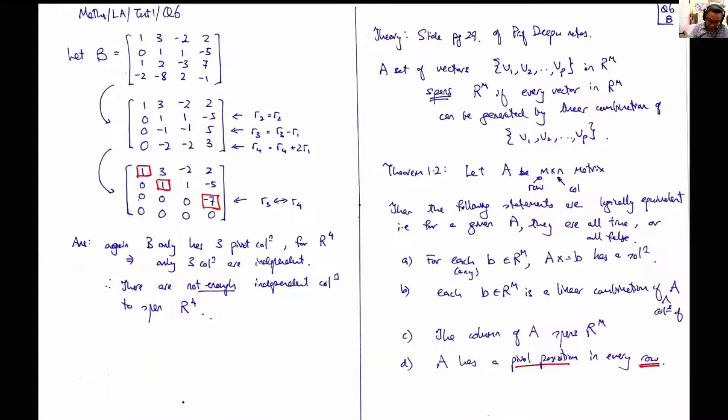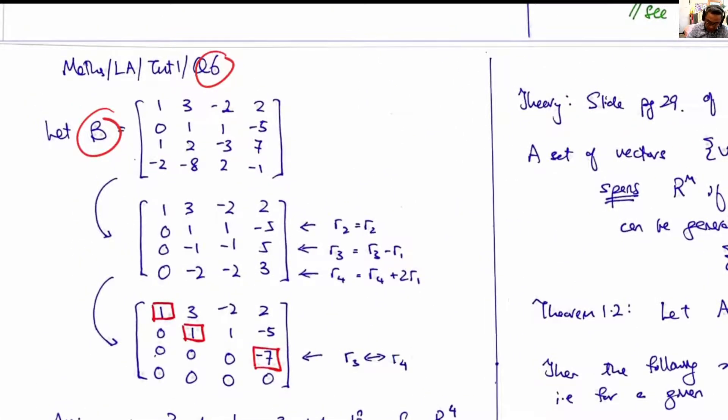Now in question 6, the second part, we are now given a matrix B. Again, this is a 4 by 4 matrix, and again we are asked the same question. To know whether any B can be constructed by columns of B, we perform Gaussian elimination to determine the number of pivot positions.